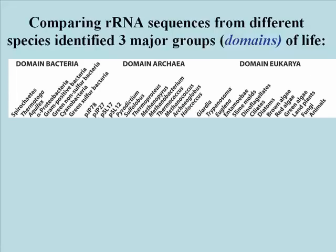When these small ribosomal subunit rRNAs, or ribosomal RNAs, for many different species are compared, it's possible to group the species by how close their rRNA sequences are. This is a molecular taxonomy.